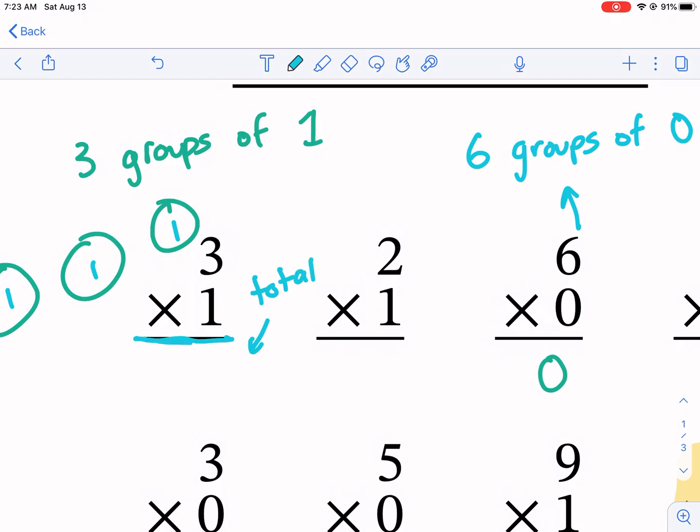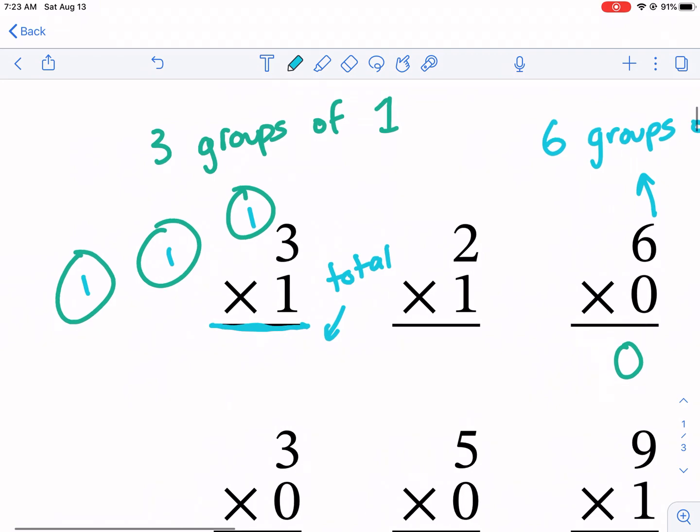How many total people or things are in these groups? We have three groups, in each group is one. Let me get my little red dot here. One plus one plus one. How many total? We add up all these groups and that's three.